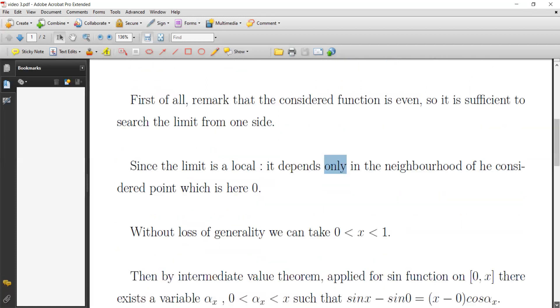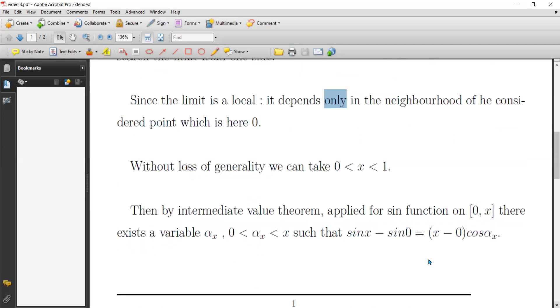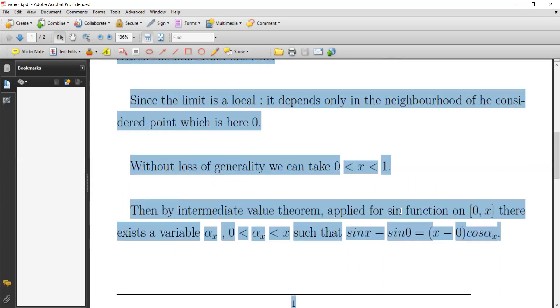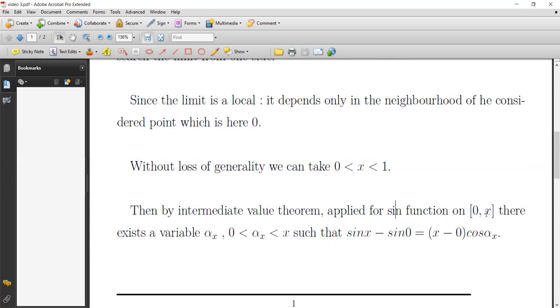By the intermediate value theorem, apply it for the function sine on the interval zero x. Don't forget that sine x is well defined on zero. There exists a variable, and I say a variable and not a constant.